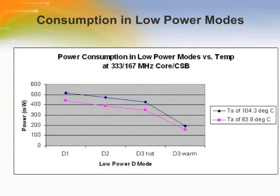This chart shows power consumption in low power modes plotted against temperature at 333 MHz and 167 MHz core SCB (coherent system bus). As can be seen here, total power consumption is reduced as temperature is reduced.